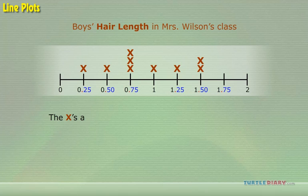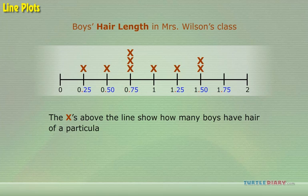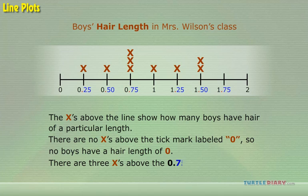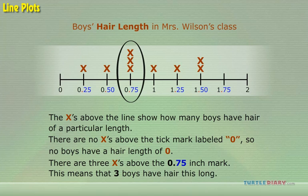The crosses above the line show how many boys have hair of a particular length. For example, there is no cross above the tick mark labeled 0, so no boys have a hair length of 0. There are three crosses above the 0.75 inch mark. This means that three boys have hair this long.